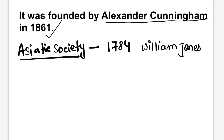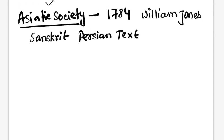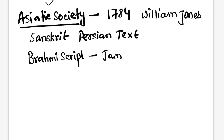The society also promoted the study of Sanskrit and Persian texts. A large development was done under this society — notably, the decipherment of the Brahmi script was actually done within this society by James Prinsep. Alexander Cunningham, founder of ASI, was also knowledgeable in the Brahmi script, but the decipherment was done by James Prinsep.